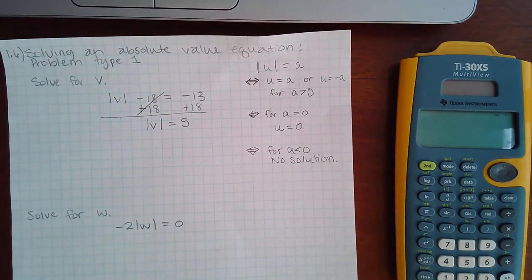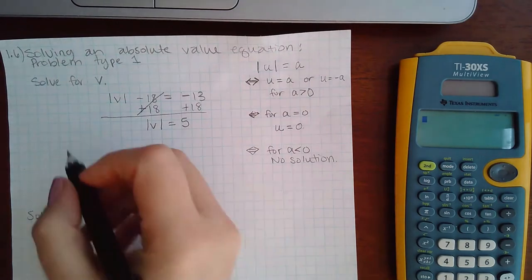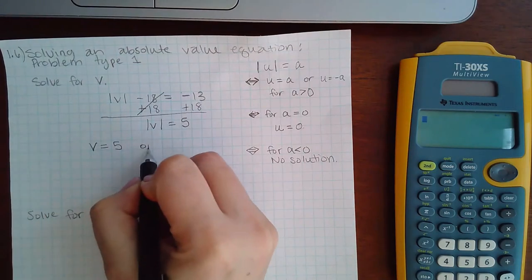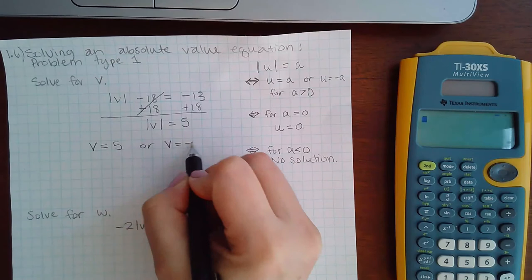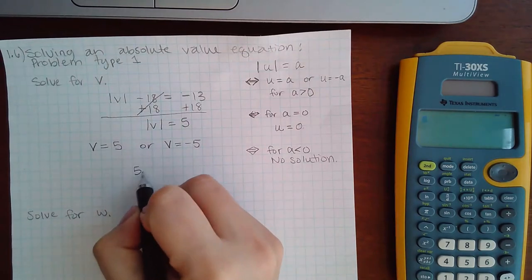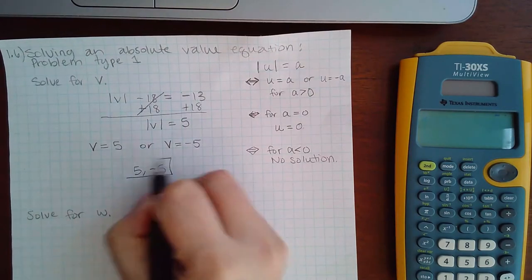So then I get two equations: v without the bars equal to five, or v without the bars equal to negative five. And since v is already by itself, there's nothing left to do, so the two answers you get here are five and negative five.